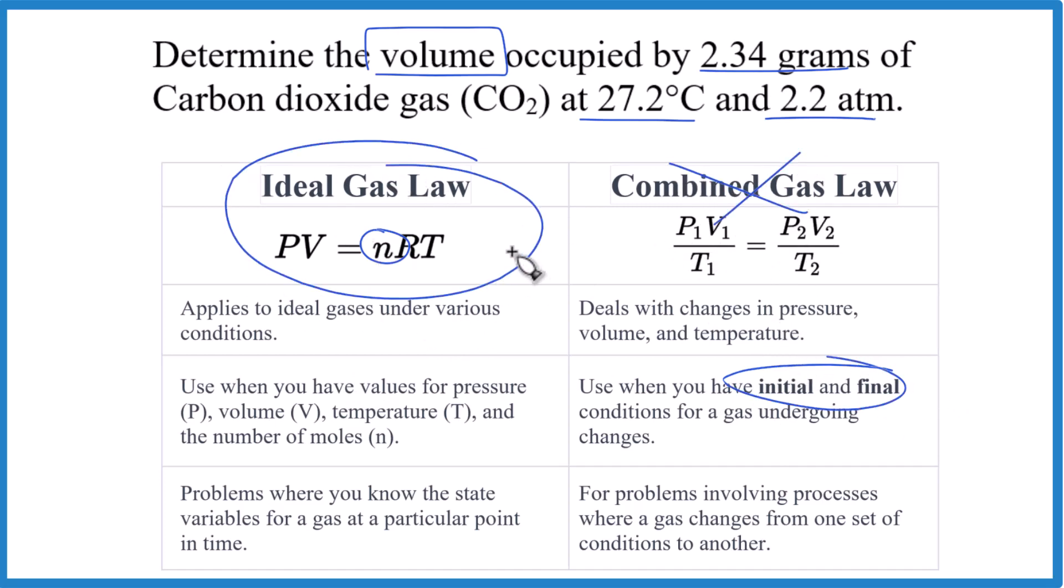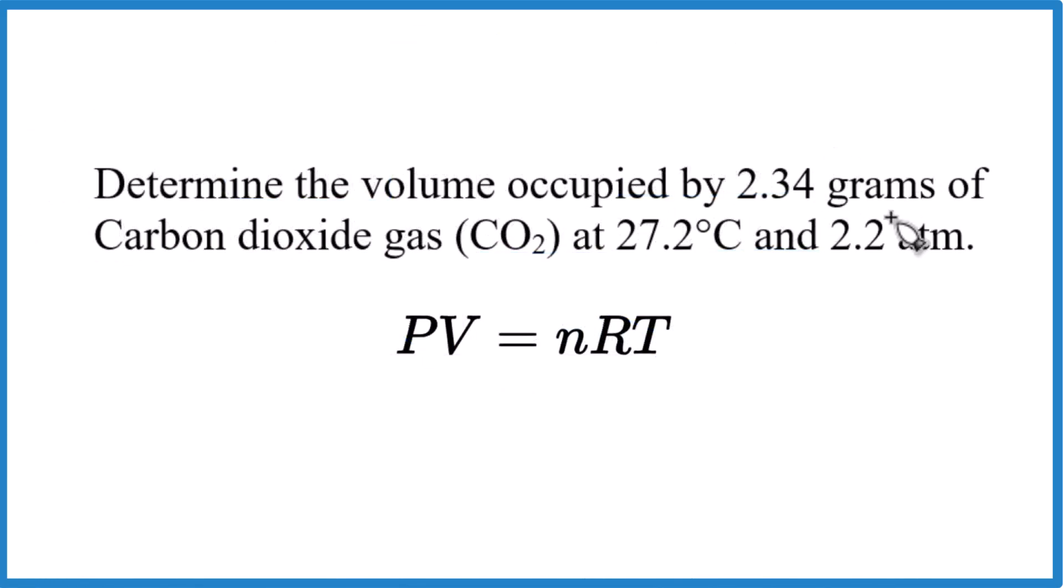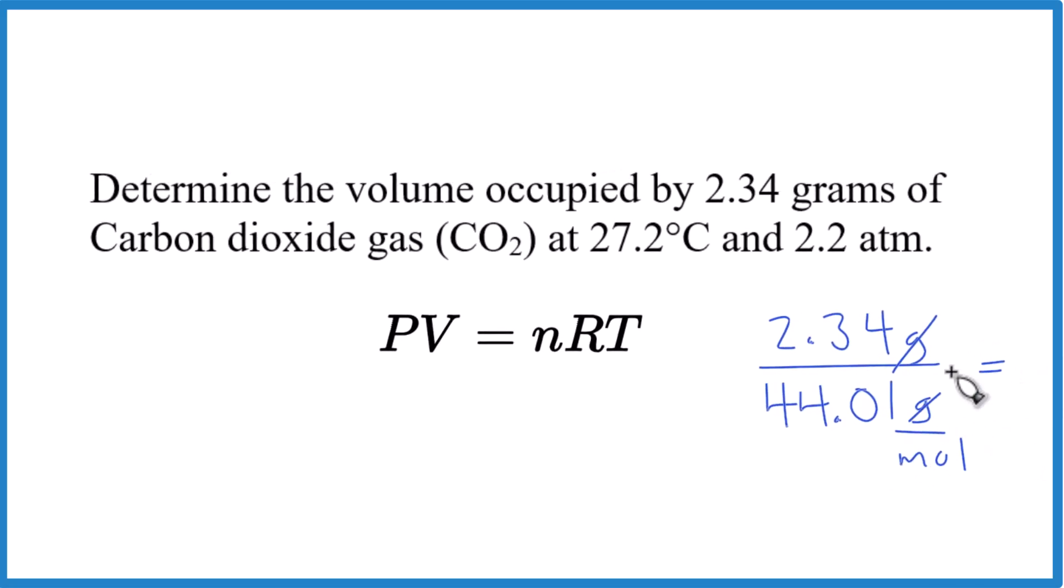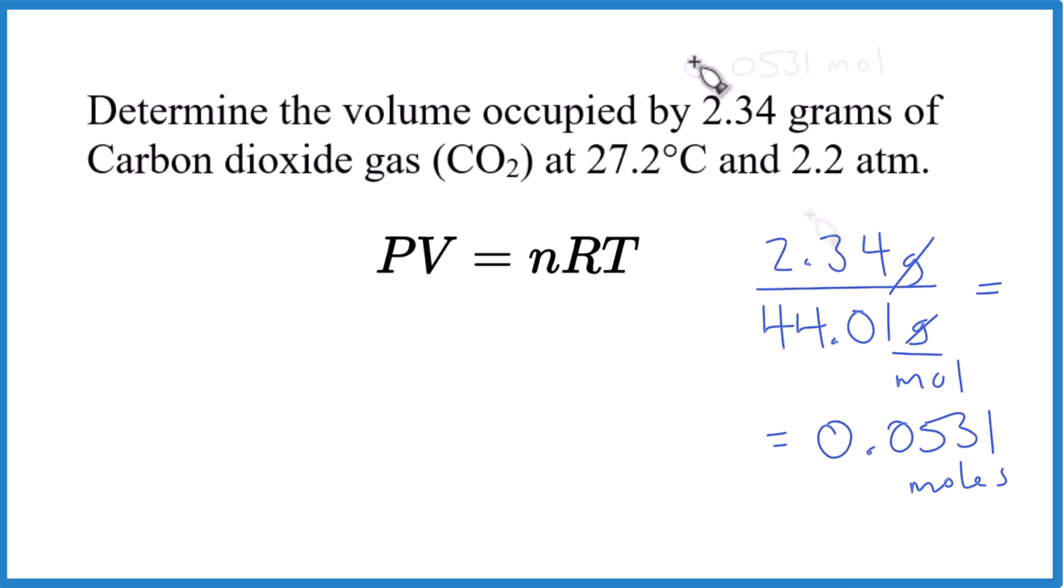We can't work with grams; we need to convert to moles. I'll take the 2.34 grams of carbon dioxide and divide by the molar mass of CO2, which is 44.01 grams per mole. When I divide, grams cancels out and I'm left with moles. I end up with 0.0531 moles.